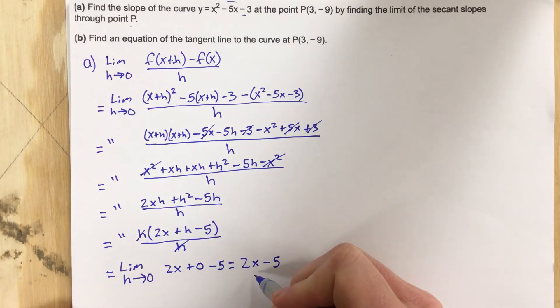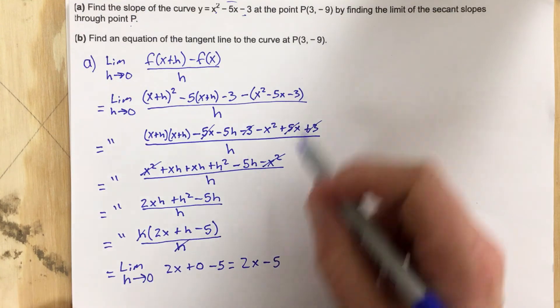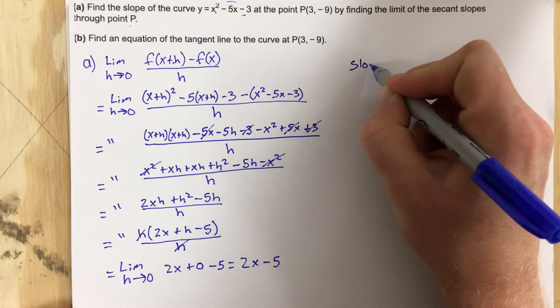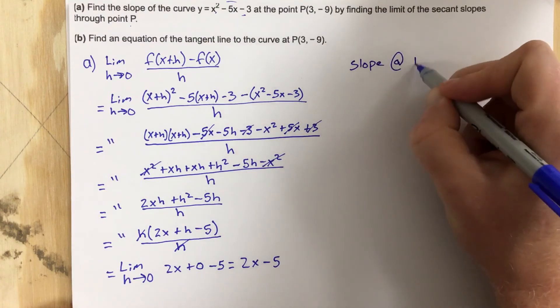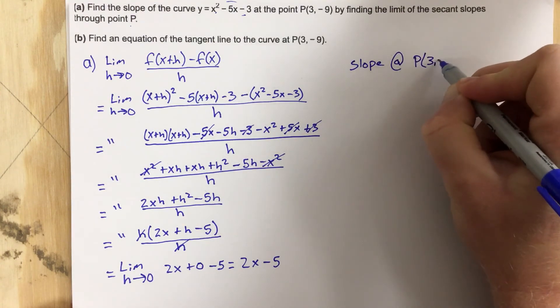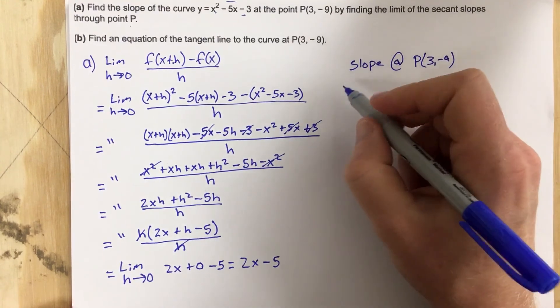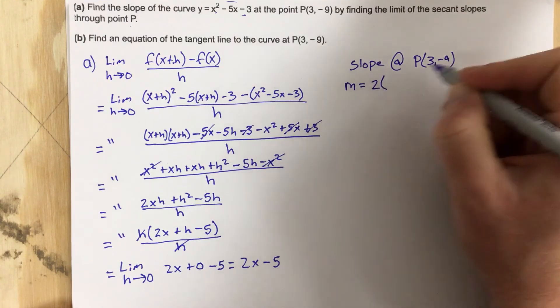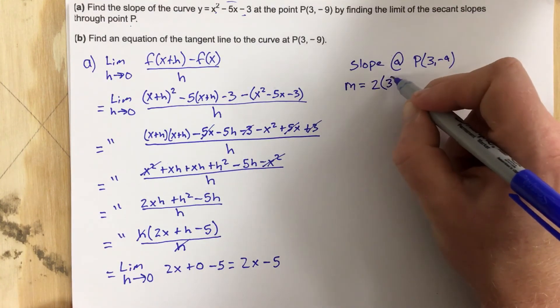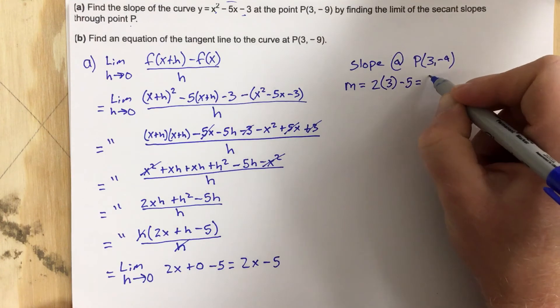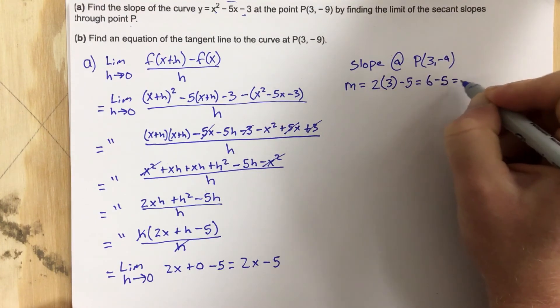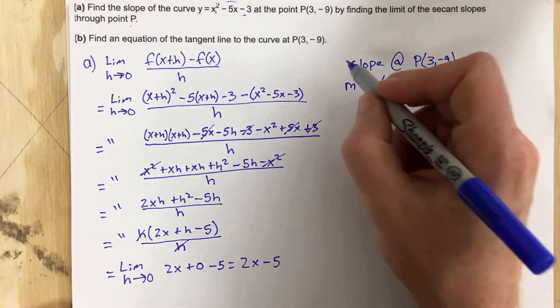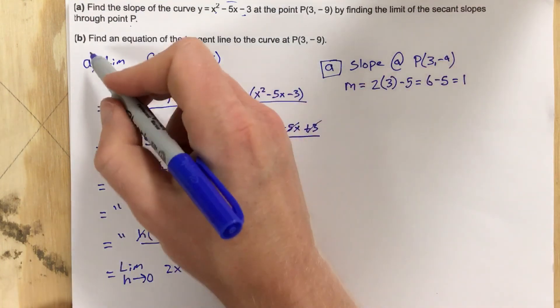What I want to do now is use this to find the slope at point P. So what's the slope at P(3, -9)? We're going to say m equals 2x minus 5, so 2 times, plug in the x value which is 3, minus 5, and we end up with 6 minus 5, which is 1. So the slope at point P is 1. That's part A. That's what they were asking us for.